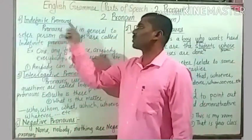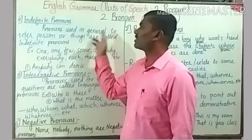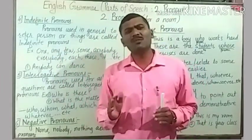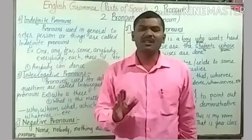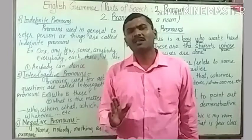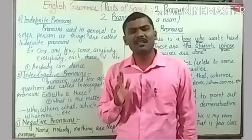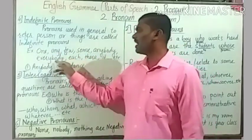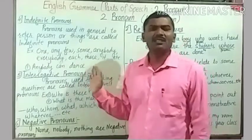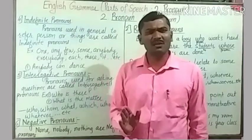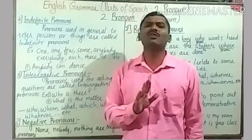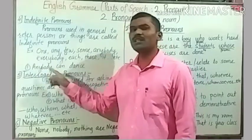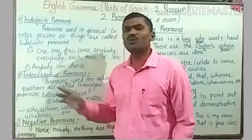Number four: indefinite pronouns. Pronouns used in a general way to refer to persons or things — which are not specifically or individually identified — are called indefinite pronouns. Indefinite pronouns include: one, any, few, some, anybody, everybody, each, their, it, etc. These pronouns can be used in a general way to address anyone not specifically referred to. For example, 'Anybody can dance.' Here, 'anybody' is an indefinite pronoun because we don't know who that anybody is.